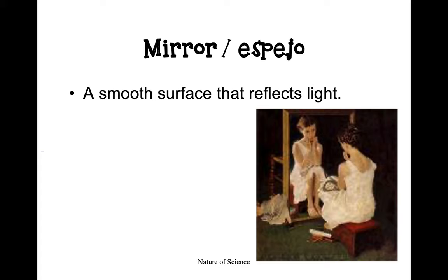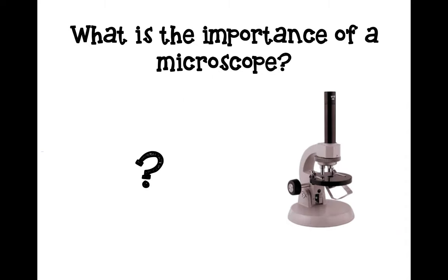Another object we can use to observe is a mirror. Mirrors are smooth surfaces that reflect light, and you may be very familiar with these. Based on what we just discussed, what is the importance of a microscope? Why might a scientist need to use a microscope?